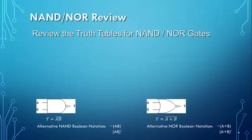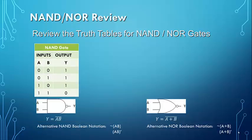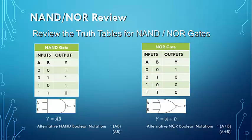To get started, let's review the truth tables for our NAND and NOR gates. We see the symbols here along with the Boolean expression notations. For the NAND gate, remember that if all the inputs are a 1, we get a 0 out, but if any input is a 0, we get a 1 out. For our NOR gate, if all the inputs are a 0, we'll get a 1 out, but if any input is a 1, we get a 0 out.